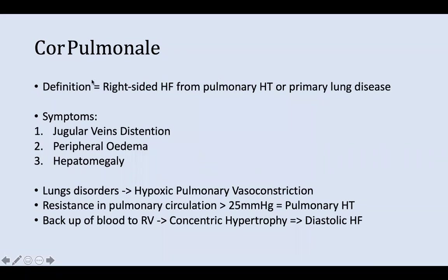Cor pulmonale is right-sided heart failure that results from pulmonary hypertension or primary lung disease. The three main symptoms result from the backing up of blood on the right side of the heart: jugular vein distension, peripheral edema, and hepatomegaly. This is really important and shows up in clinical manifestations all the time in cardiology.